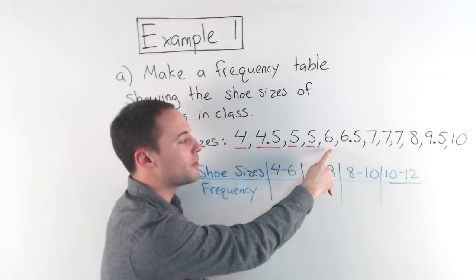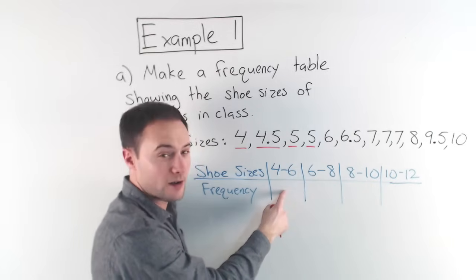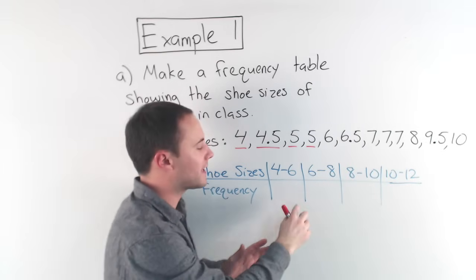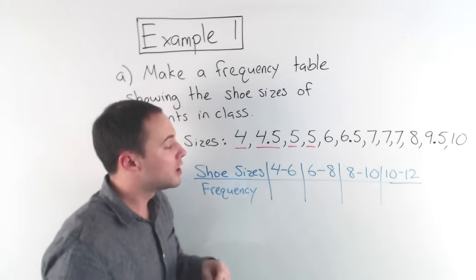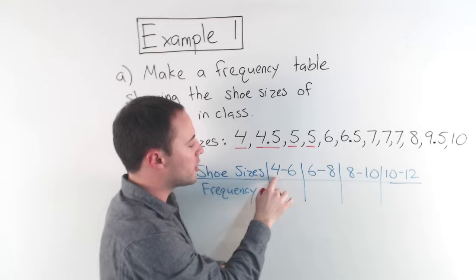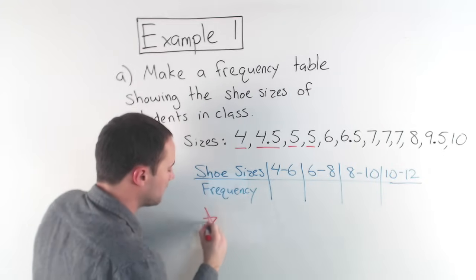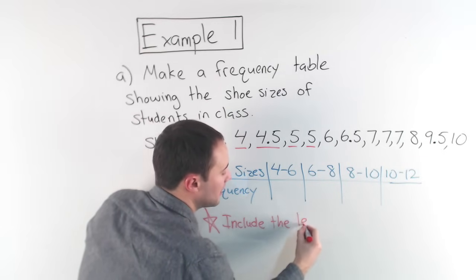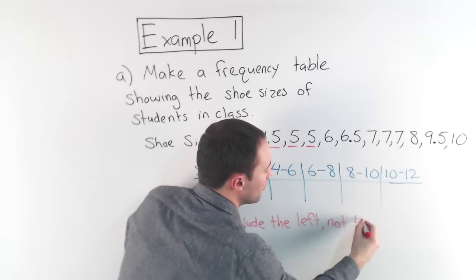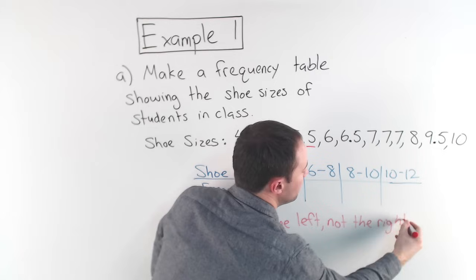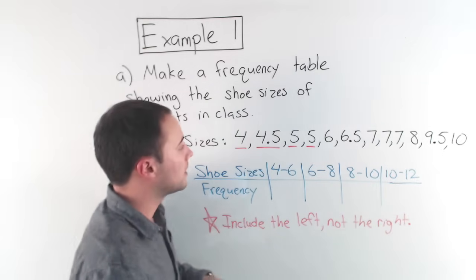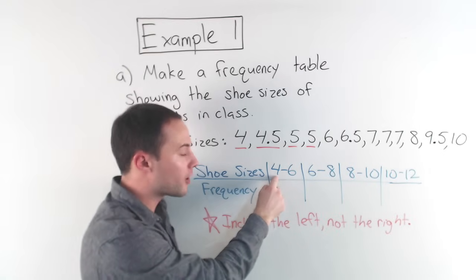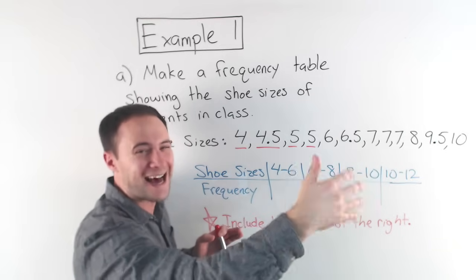Now here's a six. Now the question is, do I put this six, do I count it here or do I count it here? And you have to have a rule because you don't want to count that six twice. So the rule is you include the value on the left. So you should probably write this down. Include the left, not the right.